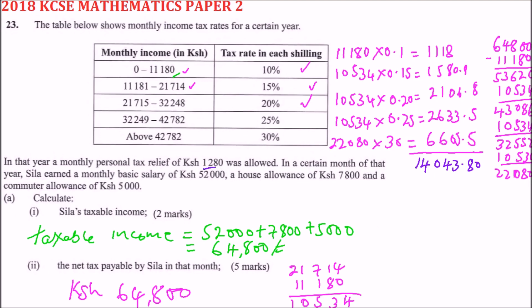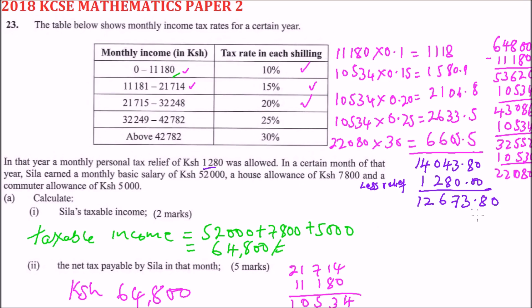We are told there was a personal relief of one thousand two hundred and eighty shillings. So we subtract one thousand two hundred and eighty from the total tax obtained. Using your calculator, that gives us twelve thousand six hundred and seventy-three point eight zero. That is the net tax Sira was to pay that month.